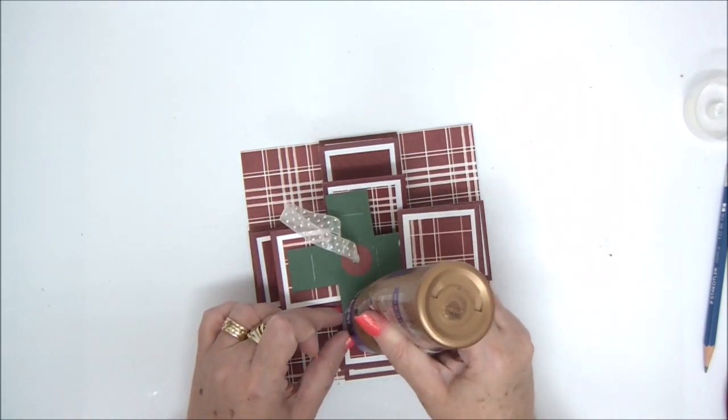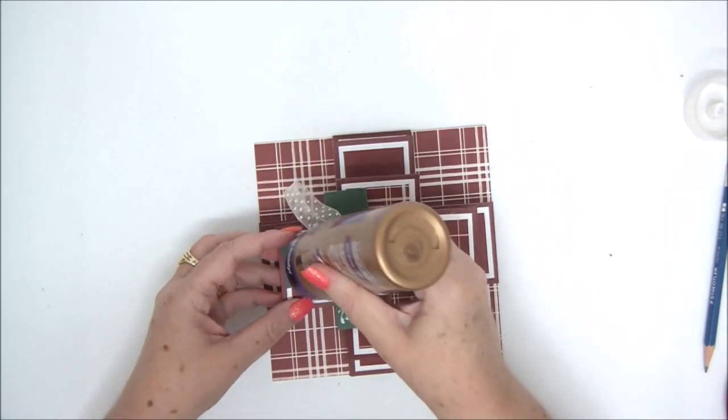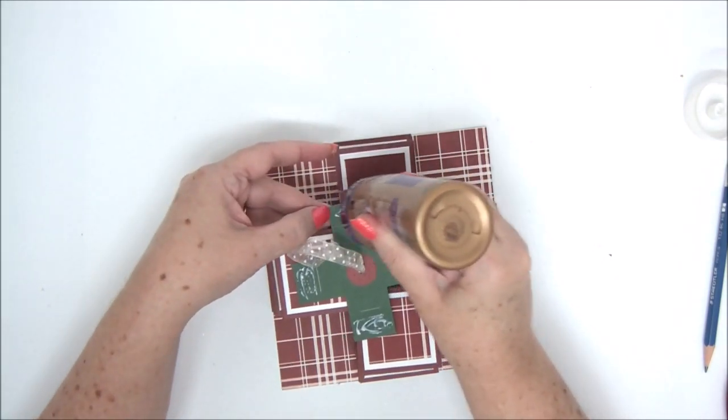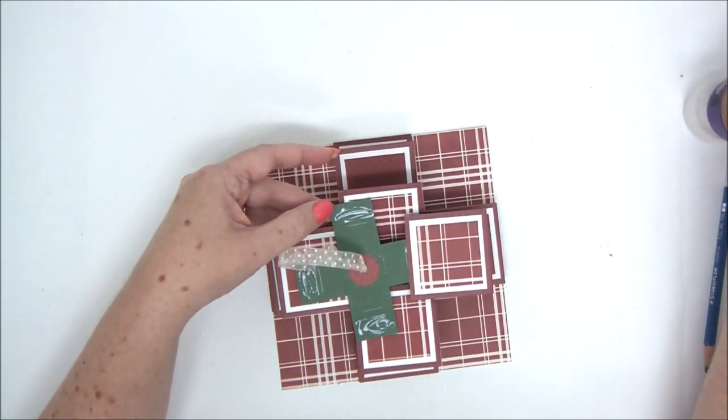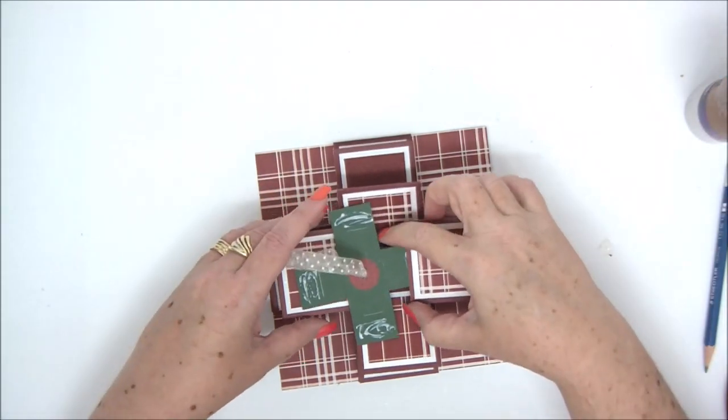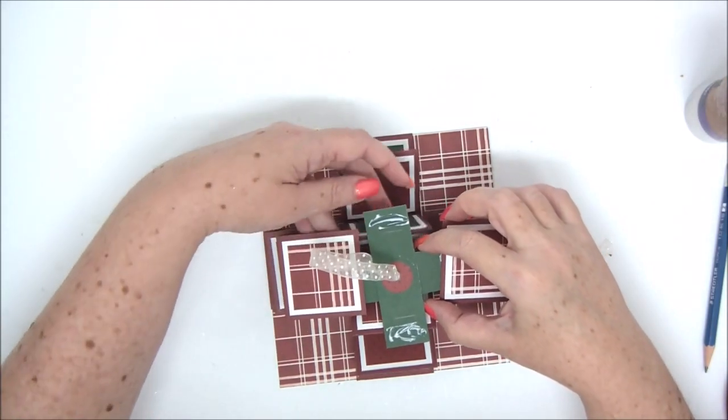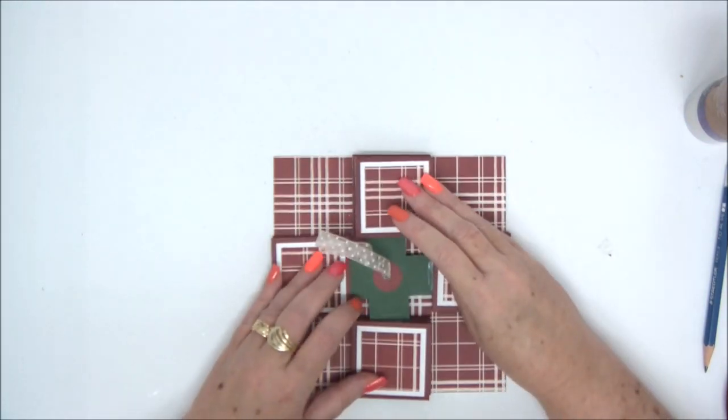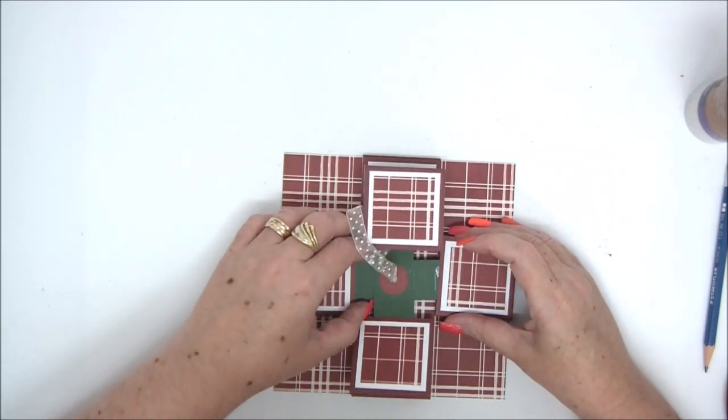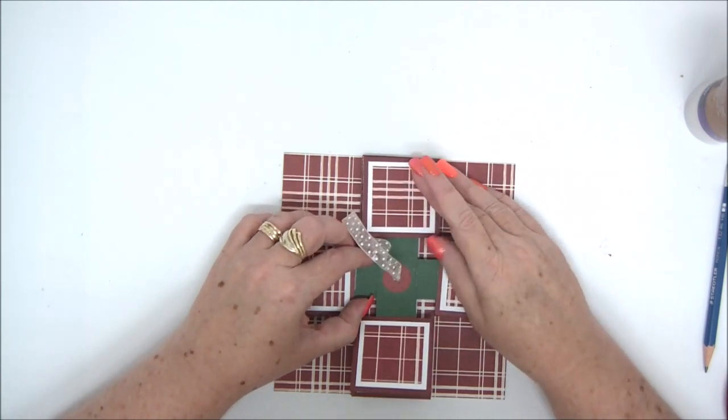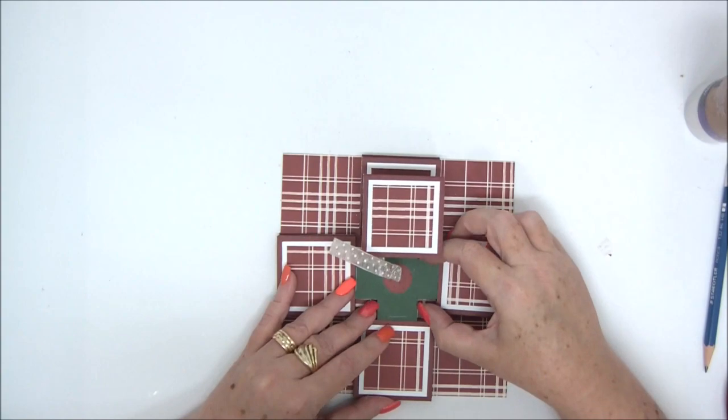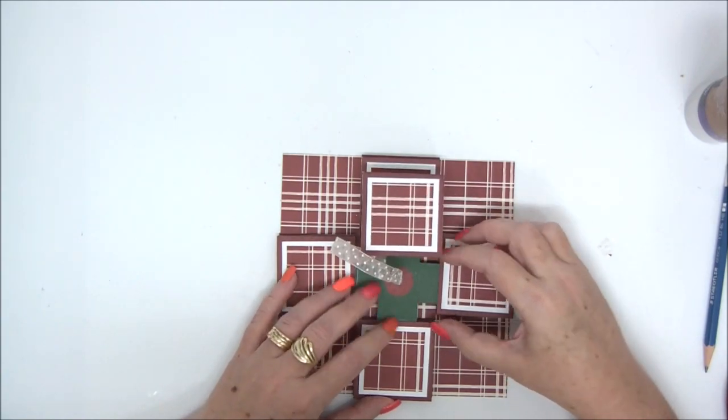That's why I like to use liquid glue because it allows me to move everything until everything is in its place. When you work with double-sided tape, there is no drying time. For me, it's less comfortable. Of course, if you like it better, then you can use that. I'm aligning all the four squares with the pencil marks.